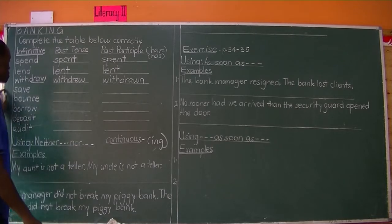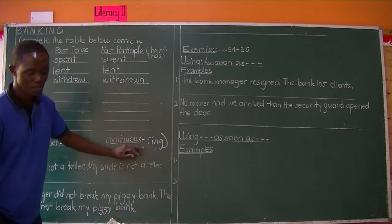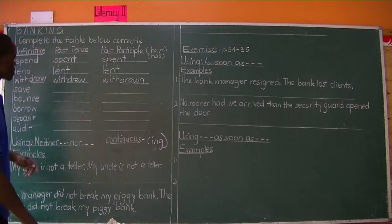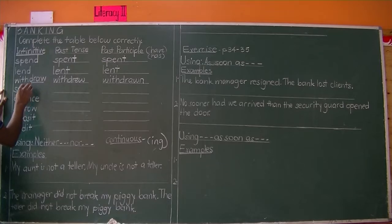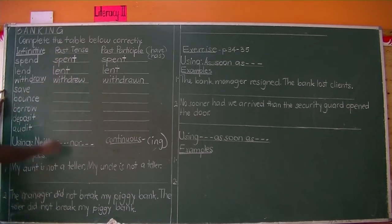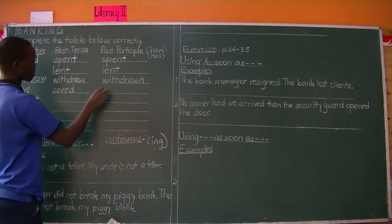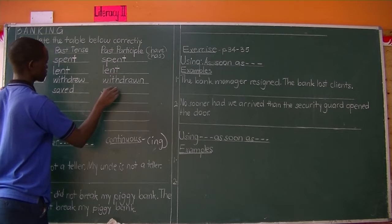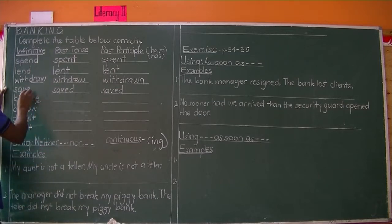From 'save': the ING form is 'saving' — you drop the E and replace it with ING. That is the continuous. Then for the past tense, you change it to 'saved.' The past participle is not different from the past tense — still 'saved.' Next is 'balance.' Since 'balance' has an E, just like 'save,' it follows the same rule — both are regular verbs.